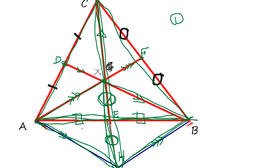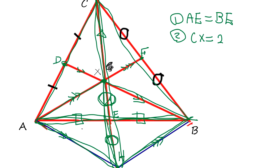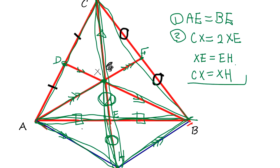That's number one — so AE equals DE, and we've proved that. Second point: CX equals twice XE, because XE equals EH, and CX equals XH. This follows from the way we extended the line.